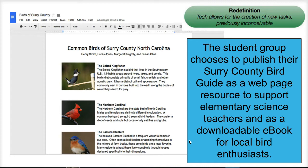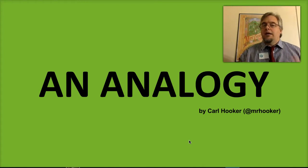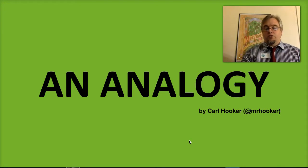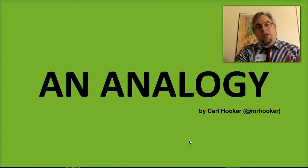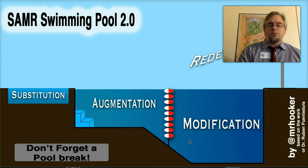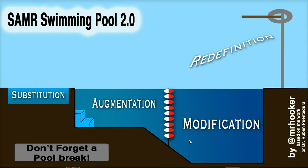Let me give you a really great analogy I found — this is by an educator named Carl Hooker. There are links to these blog posts in the resources in our Haiku section — full credit where credit is due. This is a great way of understanding the SAMR model: think of the SAMR model as a swimming pool. Your classroom is this swimming pool, and there are different levels of being involved in that pool — substitution, augmentation, modification, and redefinition.